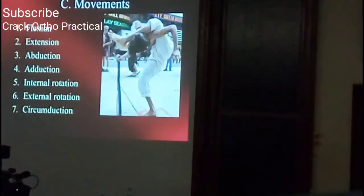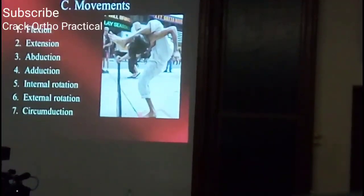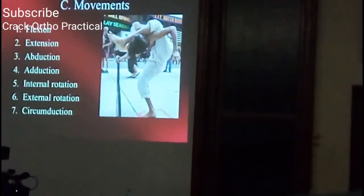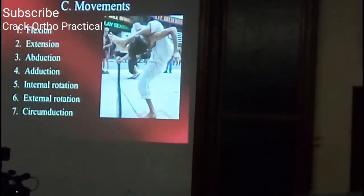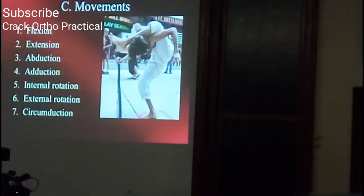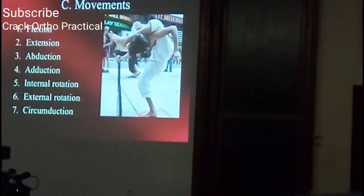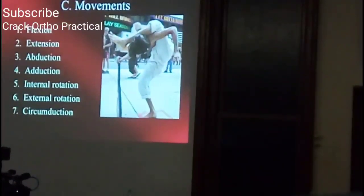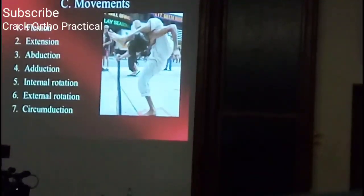Next, we come to movements, which are extremely important in a hip case. The hip joint is a ball-and-socket joint, so movements include flexion, extension, abduction, adduction, internal rotation, external rotation, and circumduction. When asked what the movements of the hip joint are, you must include circumduction — as you would for the shoulder — even though it is not tested clinically.